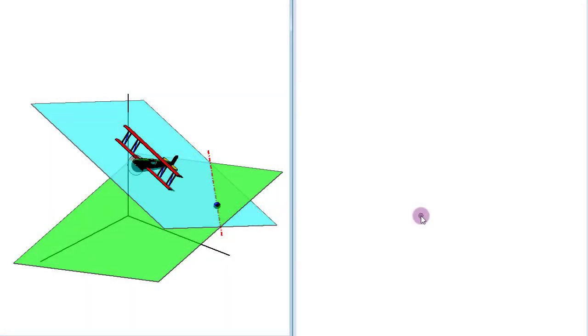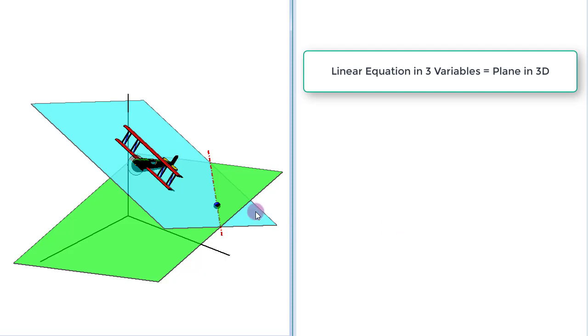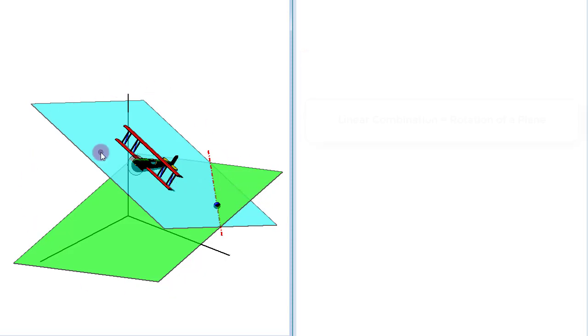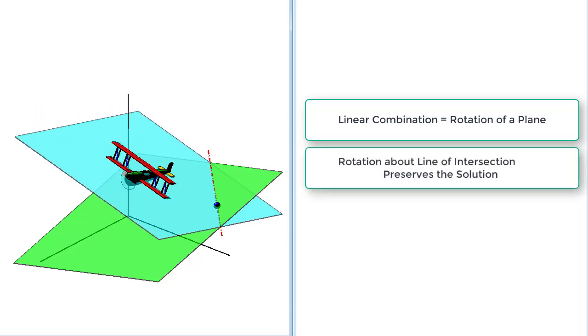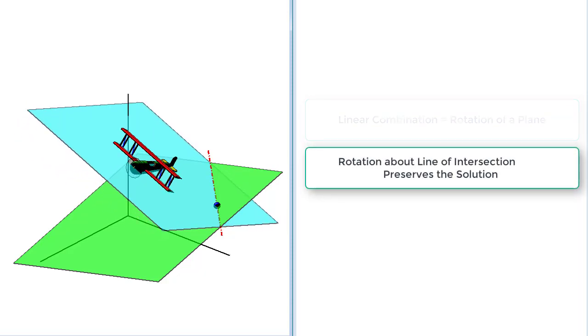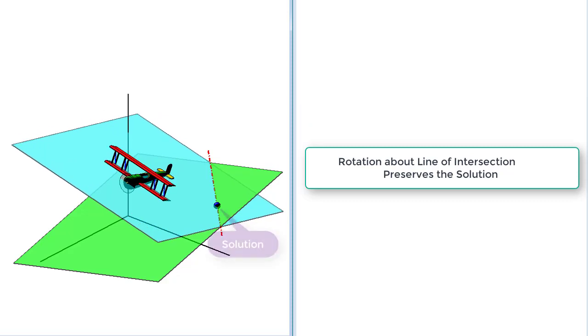So far we have seen that a system of linear equations with three variables can be represented as a set of planes in three-dimensional space. If we replace one of the planes in such a system by its linear combination with another plane in the system, it amounts to the rotation of that plane. Because such a rotation occurs about their line of intersection, it does not disturb the solution of the system.